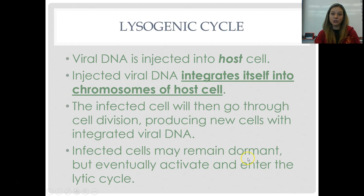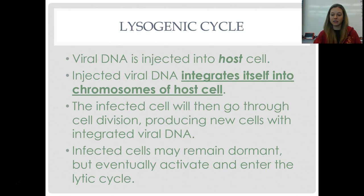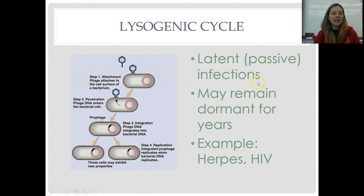Eventually those infected cells are going to activate. When you get really stressed out, your immune system weakens, and those dormant viruses activate within your own DNA. They then enter the lytic cycle, instructing the cell to make viruses, and you suddenly start seeing symptoms. These are more latent or passive infections — they can remain dormant for years, with periods of no symptoms and then periods of symptoms.